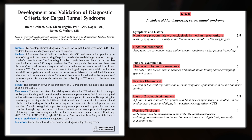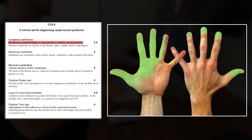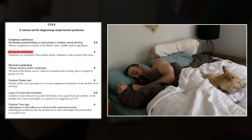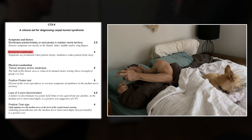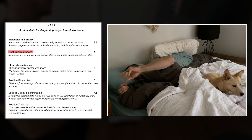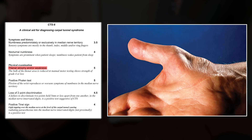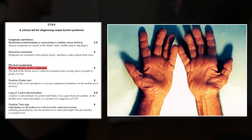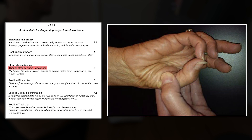The CTS-6 includes: numbness or tingling present along the sensory distribution of the median nerve; nocturnal numbness where symptoms are most prominent during sleep and numbness wakes you from sleep; and weakness and/or atrophy of the thenar muscles, which can be observed by reduced muscle bulk of the thenar area or muscle testing showing a decrease in strength.